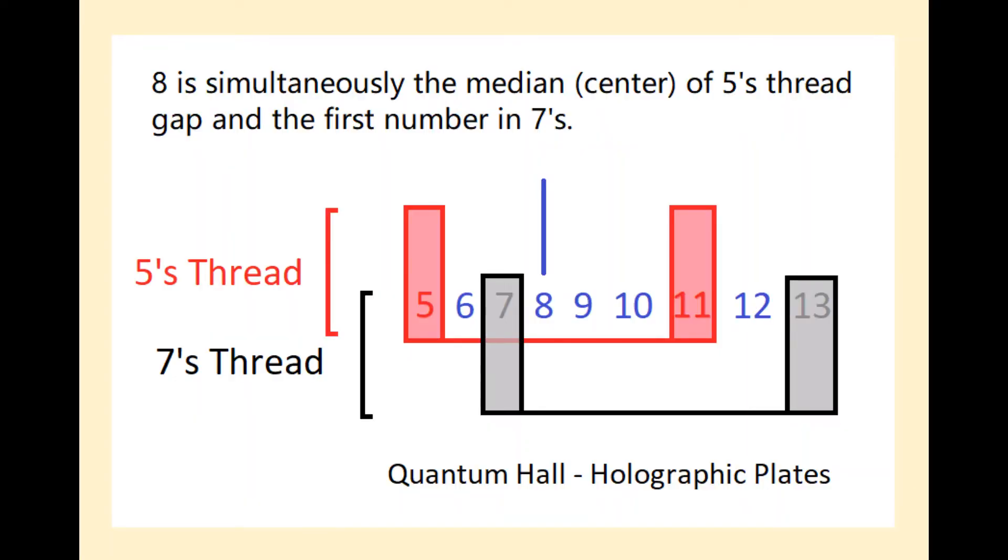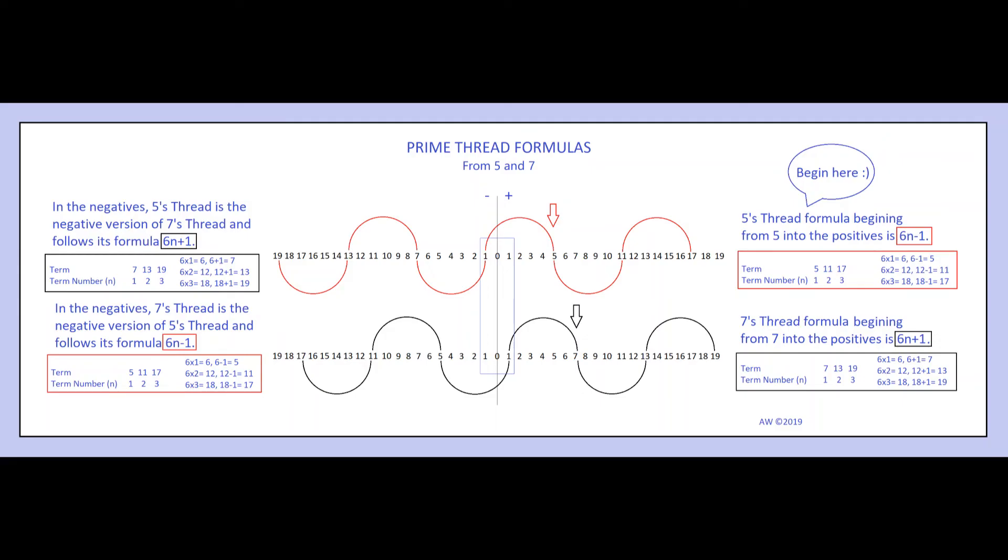We separated it into two formulas and traced them starting from 5 and 7 into the positive and into the negative. As a thread crosses 0, we surprisingly found the other thread's positive formula and numbers occurring on it into the negatives.